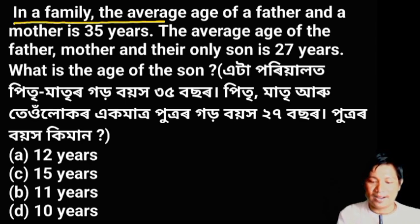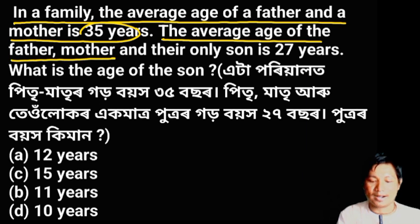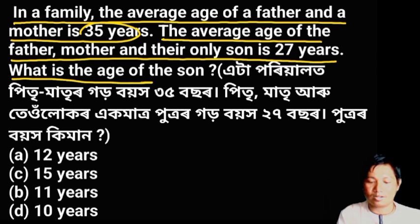In a family, the average age of father and mother is 35 years. The average age of the father, mother, and their only son is 27 years. What is the age of the son?